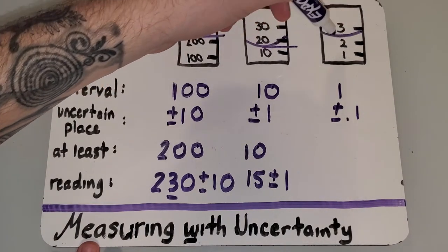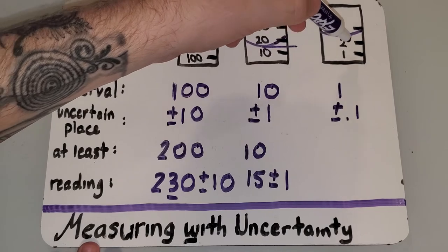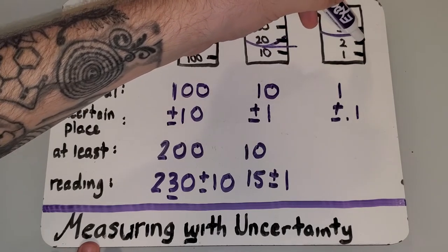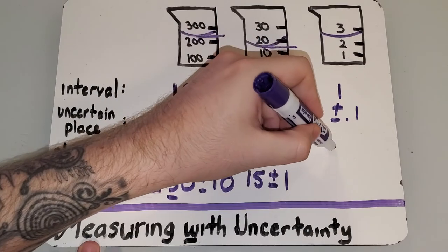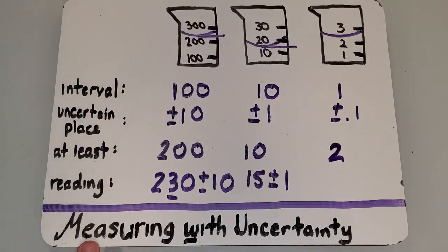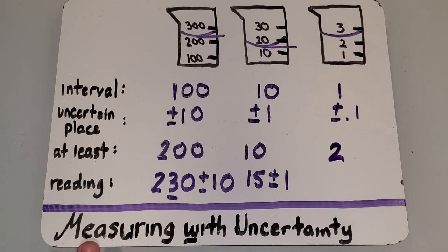For this last one here, this is counting by ones. This line is clearly above the second tick mark, but below the third. So, it's at least two. We're sure about the two.